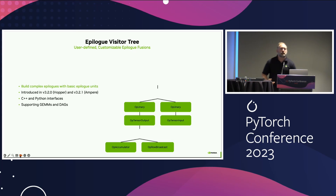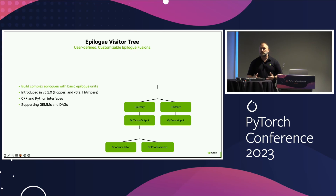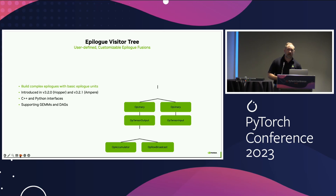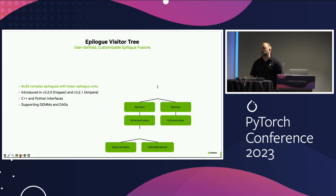Our newest feature in Cutlass is what we call an Epilogue Visitor Tree. This will allow users to develop complex epilogues using basic epilogue units — a set of small computation, load, and store operations which allow you to generate common or custom epilogues. It's available today on Ampere and Hopper architectures through the C++ and Python interfaces.